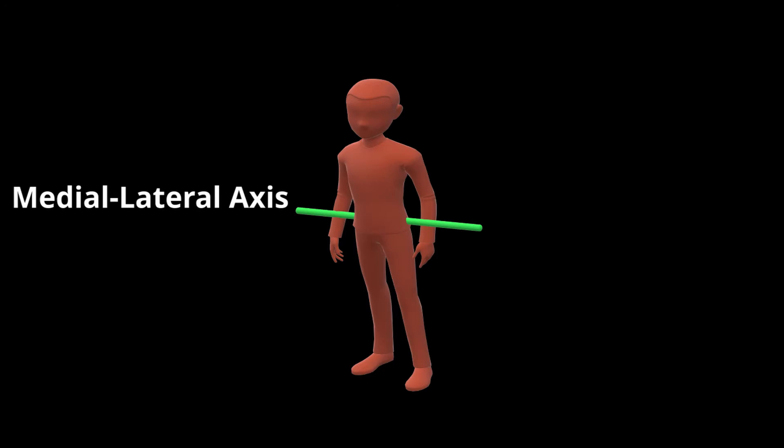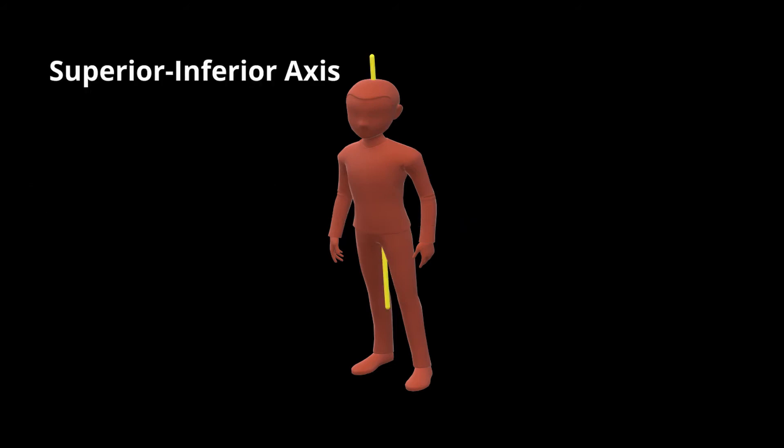Next up is our medial lateral axis, which runs from the left side of the body to the right side. Motion around this axis would be flexion and extension. Finally, we have our superior and inferior axis. Motion that occurs around this axis would be considered rotation.